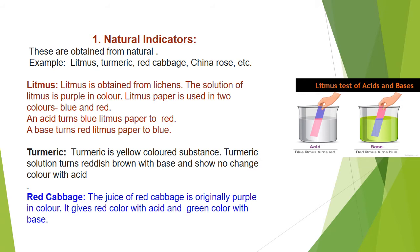Turmeric is a yellow-colored substance whose solution turns reddish-brown with a base, but shows no color change with acids. Red cabbage solution is purple in color, and gives a red color with acids and a green color with bases. We can identify acidic or basic solutions by these color changes.